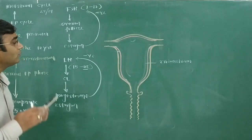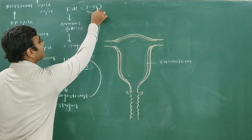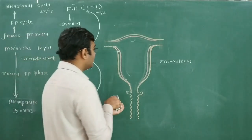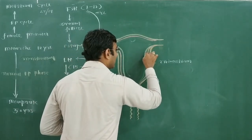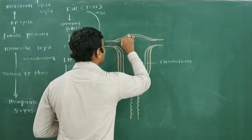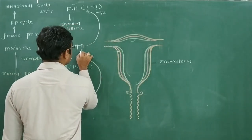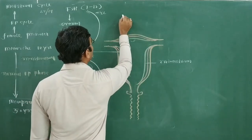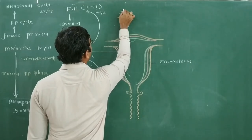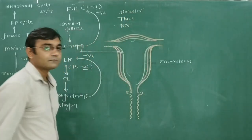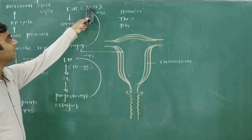Now, the effect of estrogen and progesterone on the endometrium: from days 1 to 13, whenever estrogen increases, estrogen starts to build the endometrium. So the endometrium becomes thicker, glandular, and rich with blood vessels under the effect of estrogen. The broken endometrium is rebuilt with the help of estrogen during days 1 to 13.